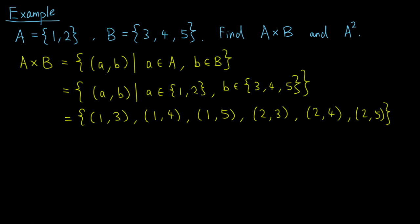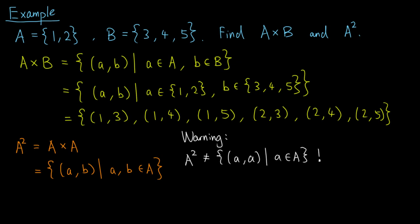Now let's move on to A squared, which just means the Cartesian product A cross A. By definition, A cross A is the set of ordered pairs (a, b) where a and b are elements of the set A. Here, you should be careful not to confuse this with the set of elements (a, a) where a is an element of A. That set enforces that both numbers in the ordered pair are the same, and it is not equal to the Cartesian product in general.